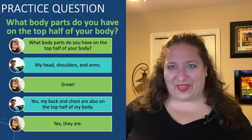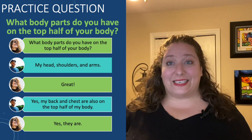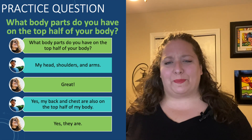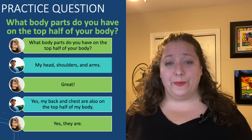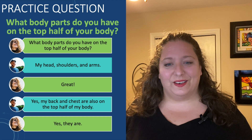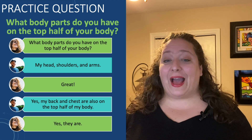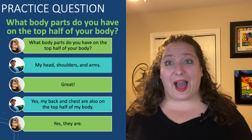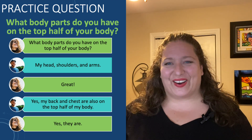Let's start with the intermediate. Please listen first. What body parts do you have on the top half of your body? My head, shoulders, and arms. Great. Yes, my back and chest are also on the top half of my body. Yes, they are.